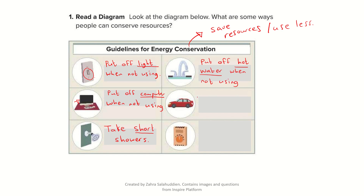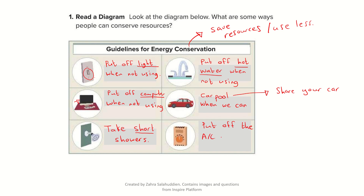Hot water is the one that uses energy to heat up. Over here we have a picture of a car. If we share our car — the word for sharing your car is carpool. If we carpool when we can, we will save energy. Carpool means to drive together to the same place. The last one shows a thermostat — the thing we use to turn the AC up and down. Put off the AC when you are not using it, as we all know the AC uses a lot of electricity.